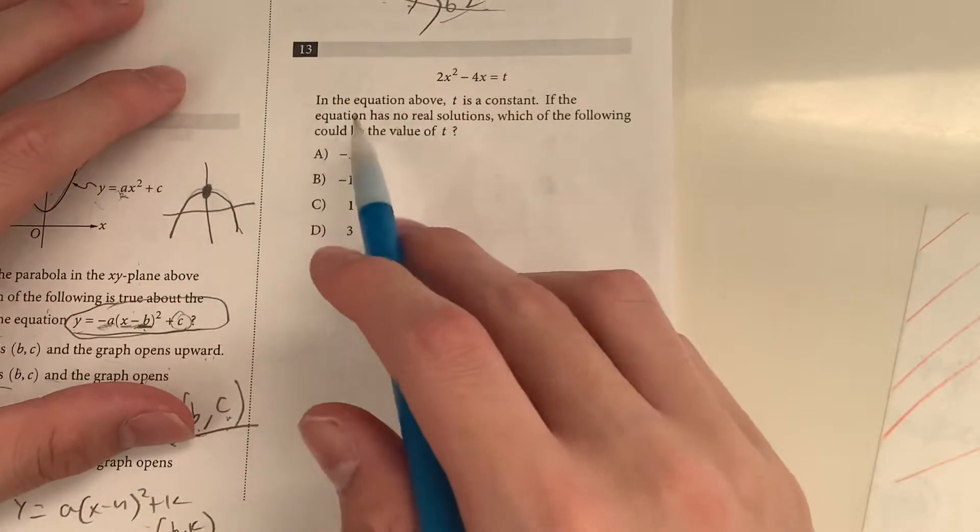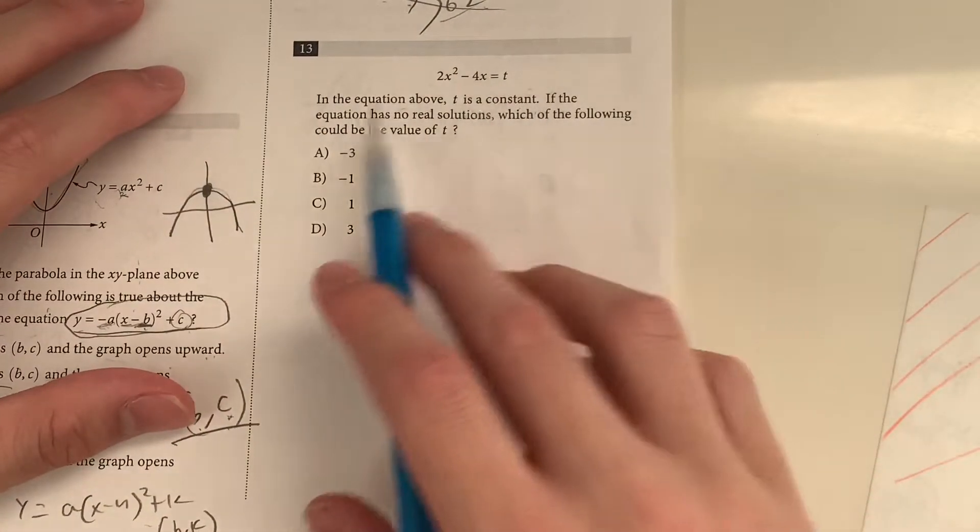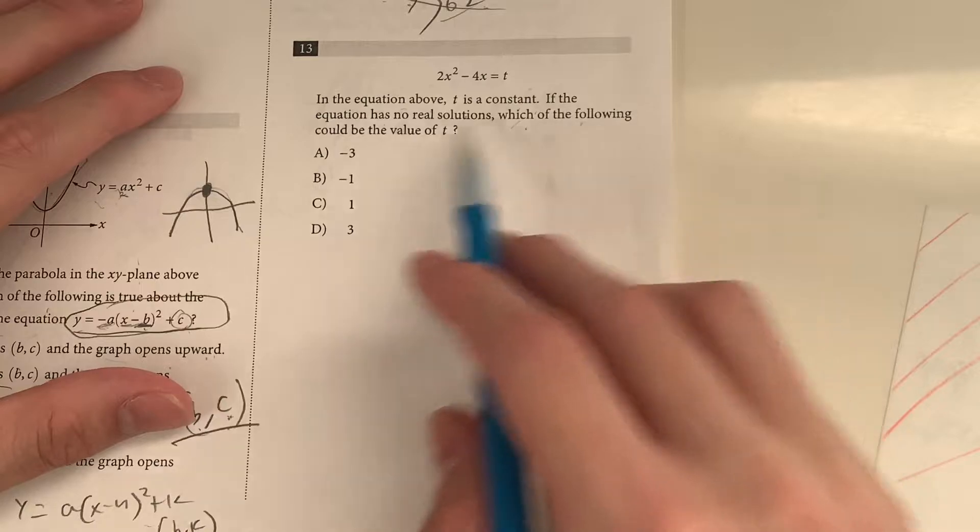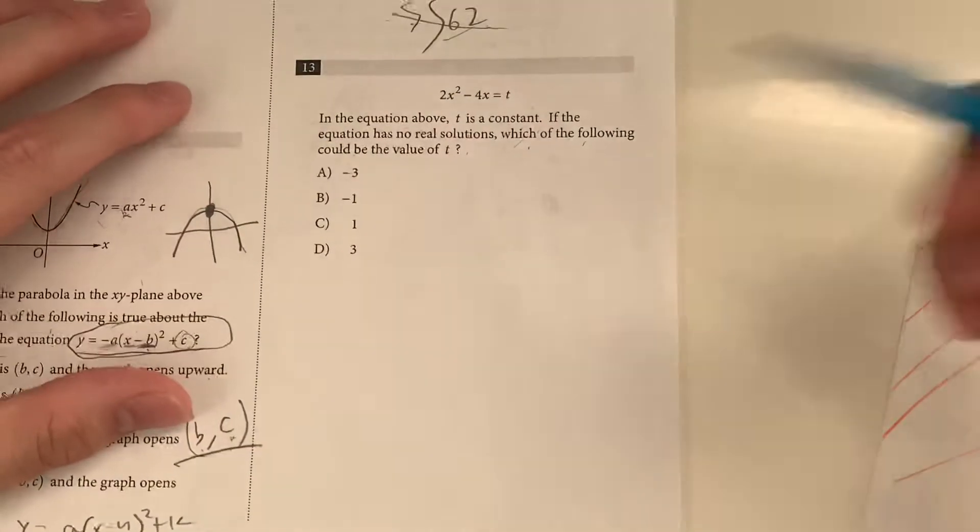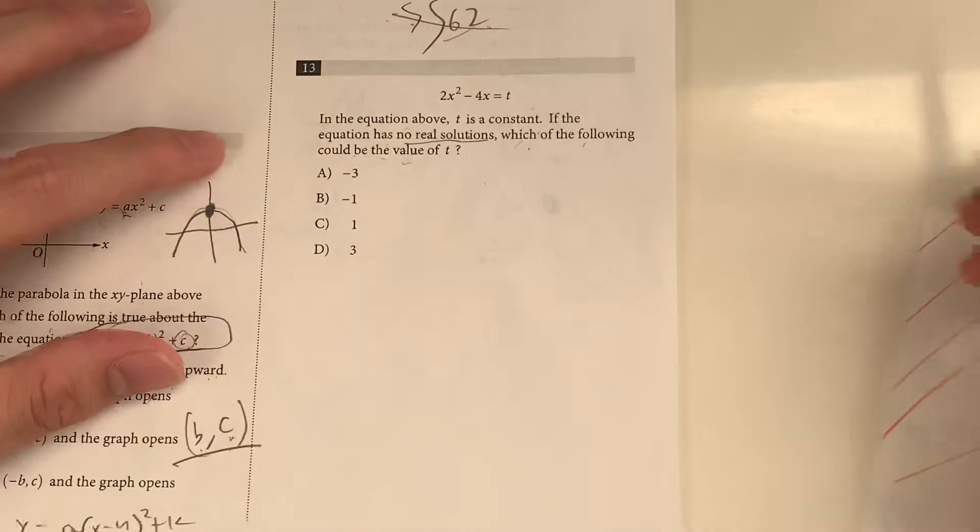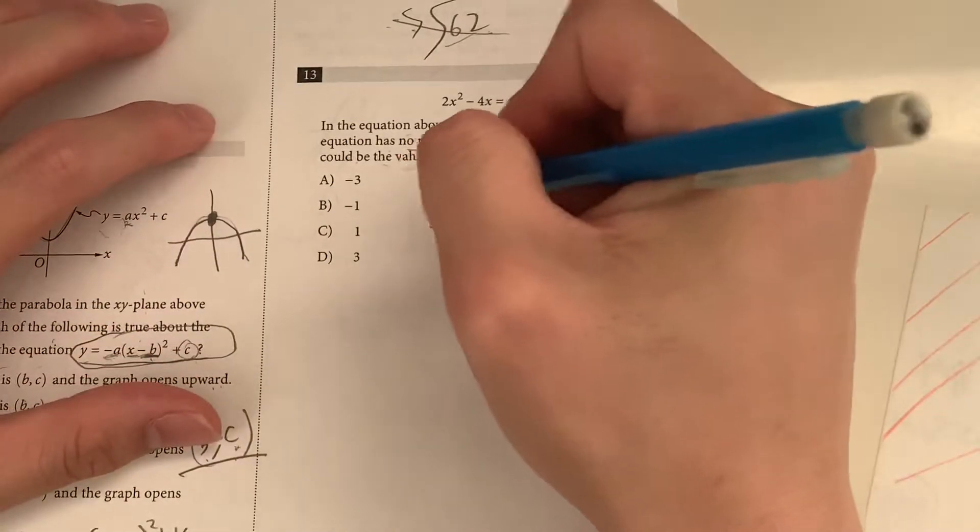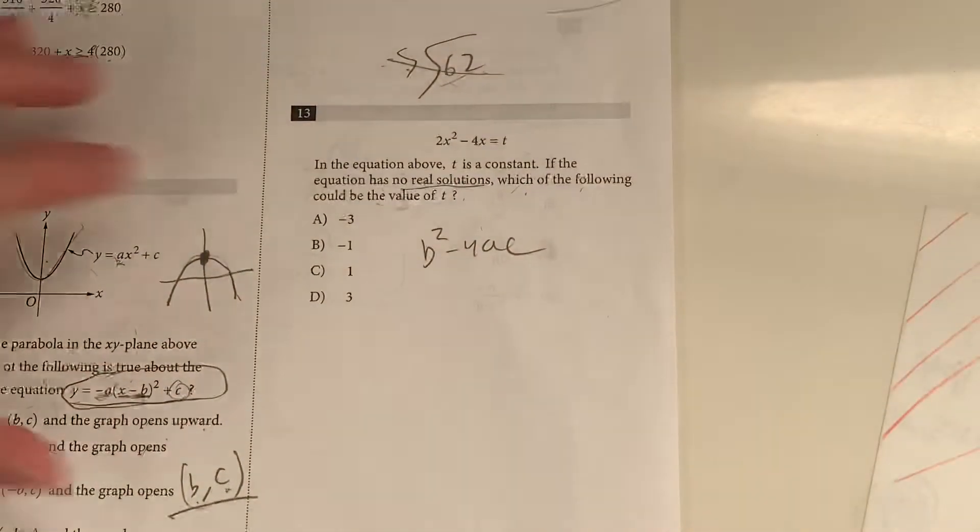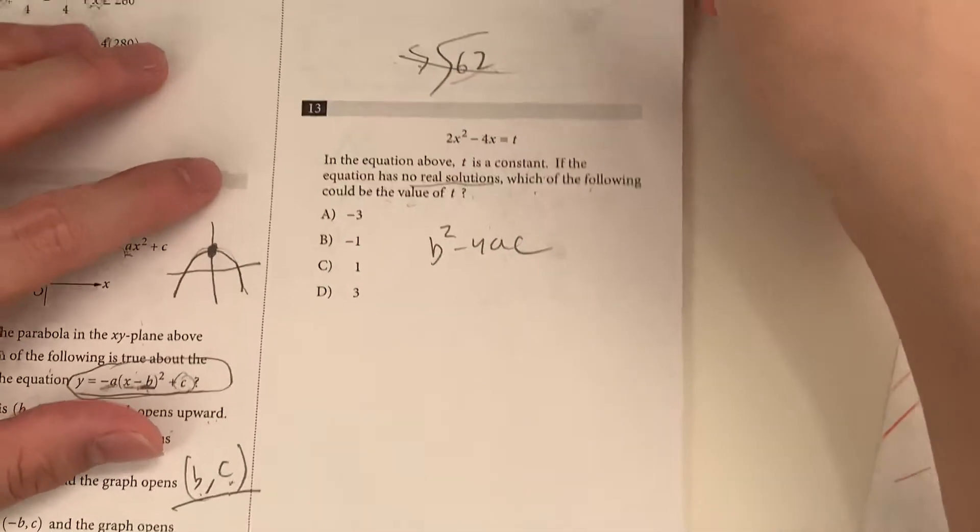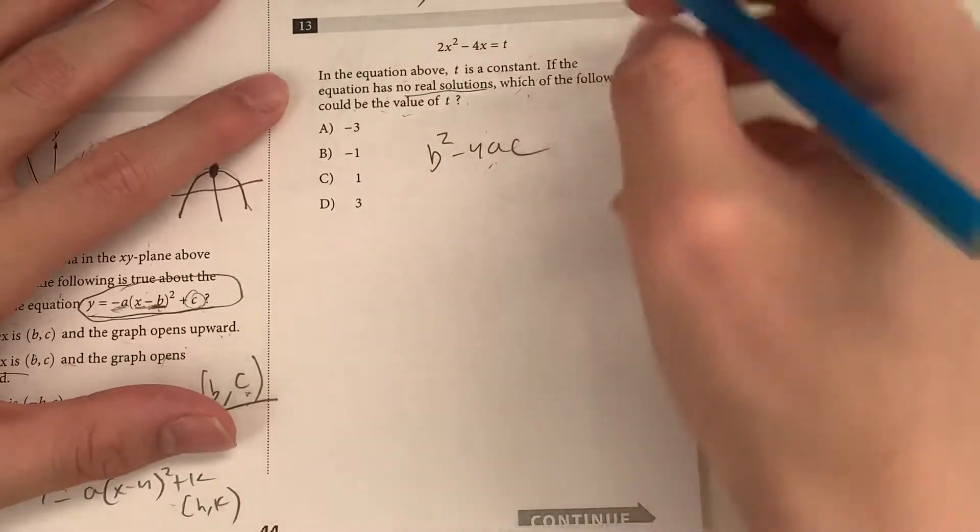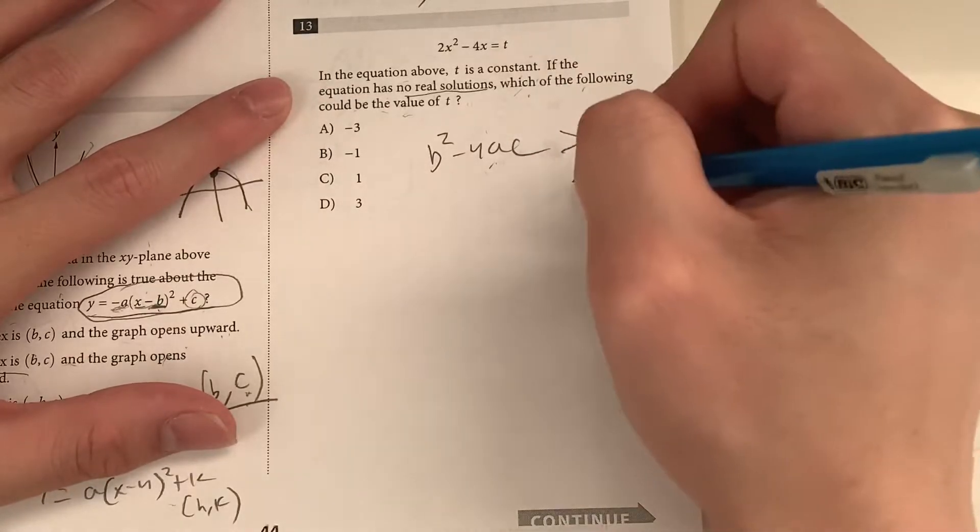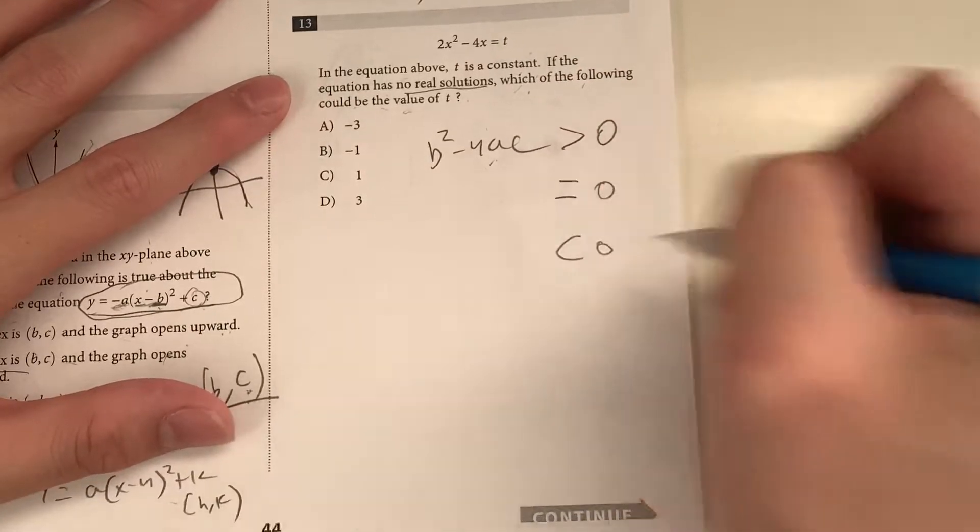Question 13. In the equation above, T is a constant. If the equation has no real solutions, which of the following could be the value of T? So automatically, when they ask for when there's no solution, we immediately think of the discriminant. What is the discriminant? It's basically B squared minus 4ac. Now, what are the three possible situations for this?